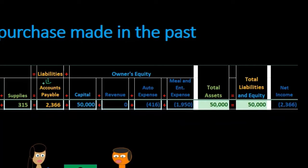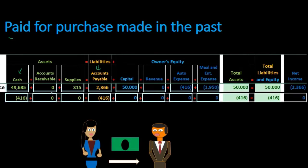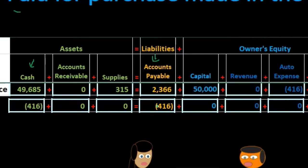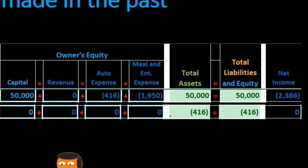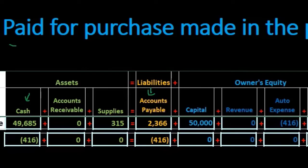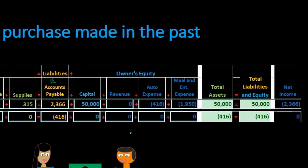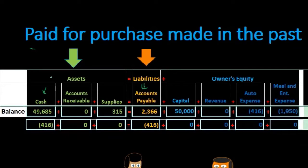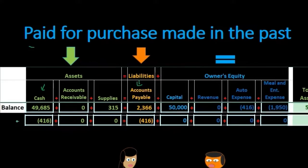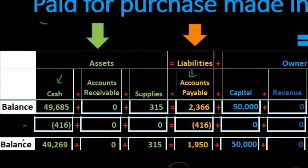We also know accounts payable goes down because it's a liability representing money owed. We have now paid that money, so the amount owed decreases. The transaction: decrease cash by $416 and decrease accounts payable by $416. Total assets decrease by $416; total liabilities and equity also decrease by $416 due to the liability decrease. There is no effect on net income — no effect on revenue or expenses. Assets go down, liabilities go down, equity remains the same.